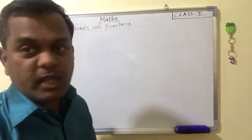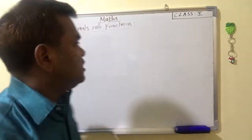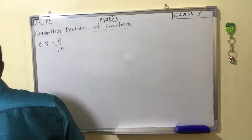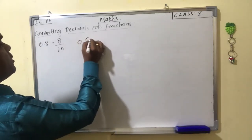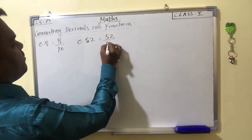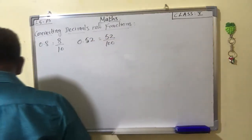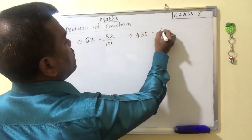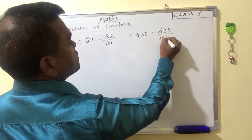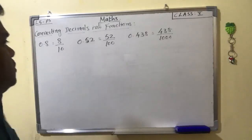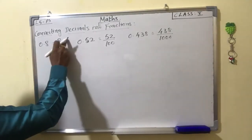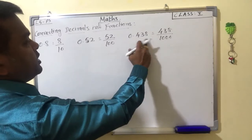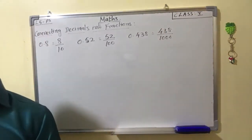I will explain with examples. First I will write the answers, then I will explain. 0.8 is equal to 8 by 10. 0.52 is equal to 52 by 100. 0.438 is equal to 438 by 1000. Look at these three examples.